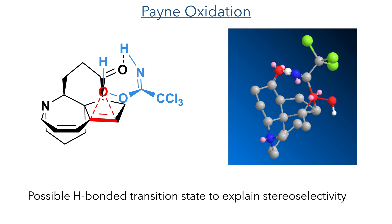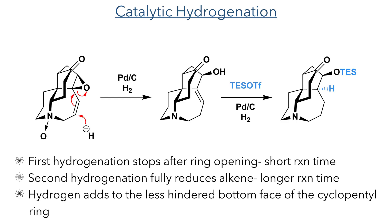An unwanted side reaction of this oxidation was the oxidation of the tertiary amine. However, this was reduced during the next reaction, which was catalytic hydrogenation using hydrogen gas and palladium on carbon. The first hydrogenation used a short reaction time of 3 hours, adding a hydride to the double bond which promoted opening of the epoxide ring and migration of the double bond. The newly produced alcohol was then protected with a TES group, and the remaining double bond was hydrogenated using similar conditions for 20 hours. The stereochemistry of this hydrogenation was controlled by the TES group, which sterically hindered one face of the molecule and only allowed hydrogen to add from the opposite face.